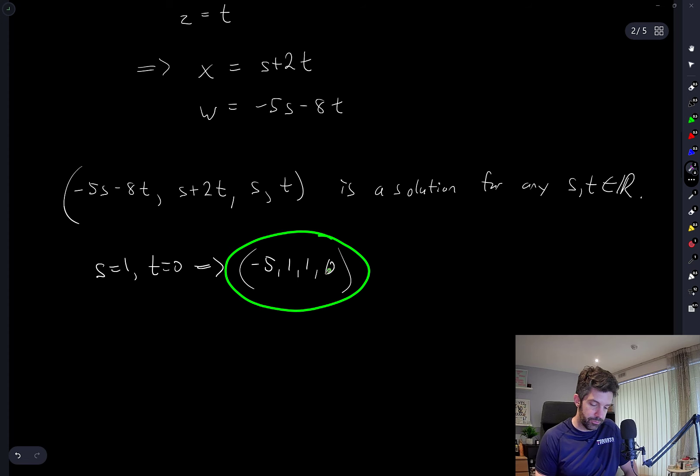Every multiple of this will also be a solution, again if we just let T be equal to 0, but if we let S be any other real number, then the output here would just be that multiple of this vector.